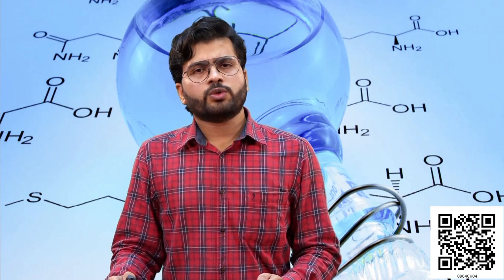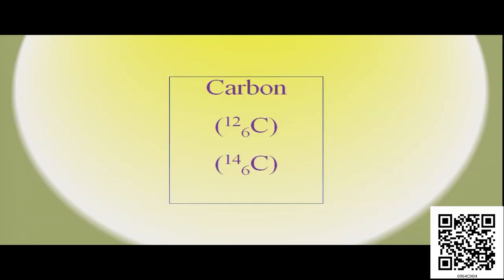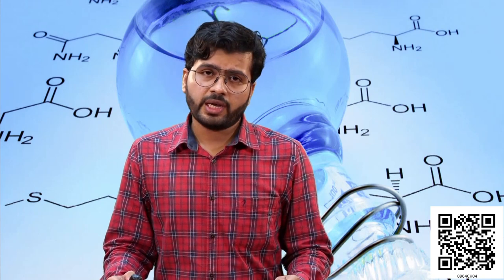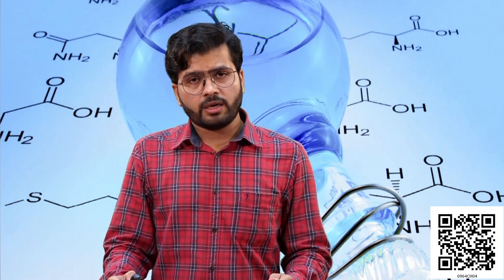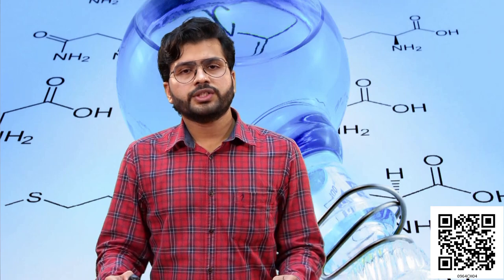Let us take another example of an isotope pair — carbon. Carbon-12 and carbon-14. When we say carbon-12 and carbon-14, that indicates the mass number of carbon. As all of you know, the atomic number of carbon is 6, meaning it contains six protons in its nucleus, but the number of neutrons is different: in one case it is six, in another case it is eight. So as the mass number is different, physical properties will be different but chemical properties will be same. Atoms of the same element having similar atomic number but different mass number are called isotopes.